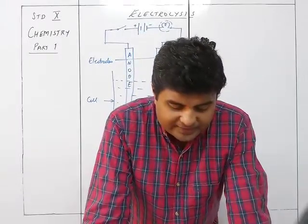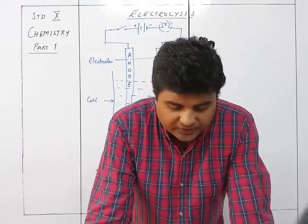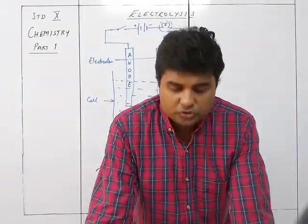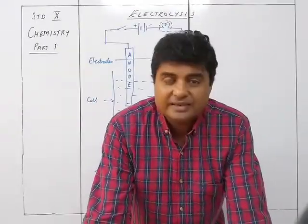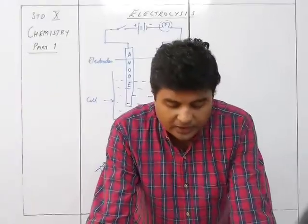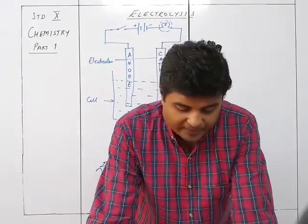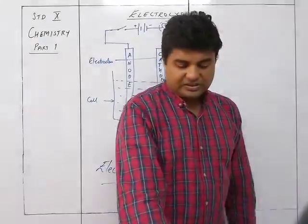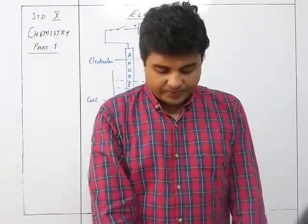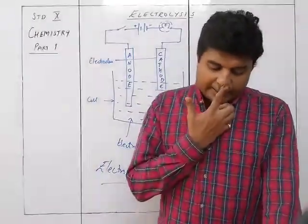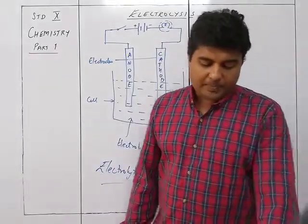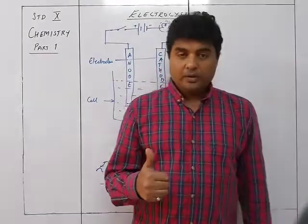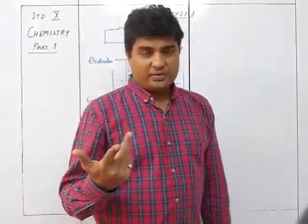The anode is the electrode connected to the positive terminal of the battery via a metal wire, bulb, and a key switch. The cathode is the electrode connected to the negative terminal of the battery. When the switch is on, the electrolyte starts dissociating.